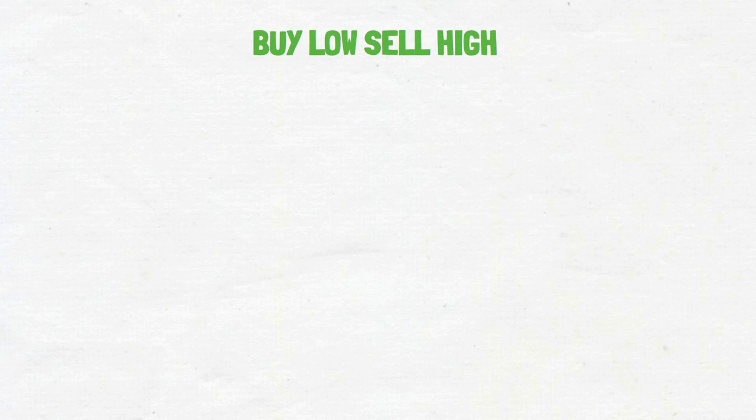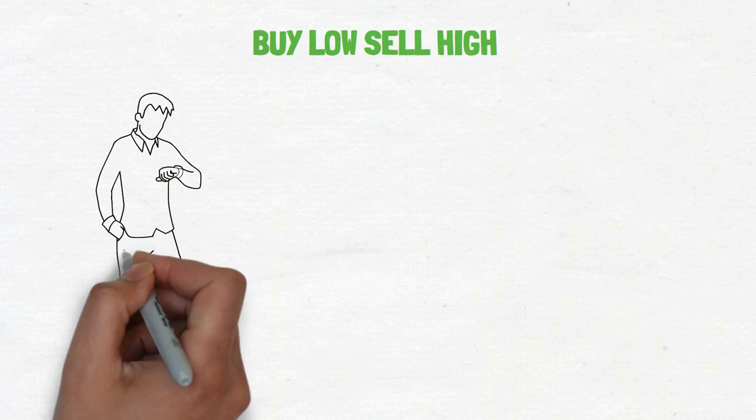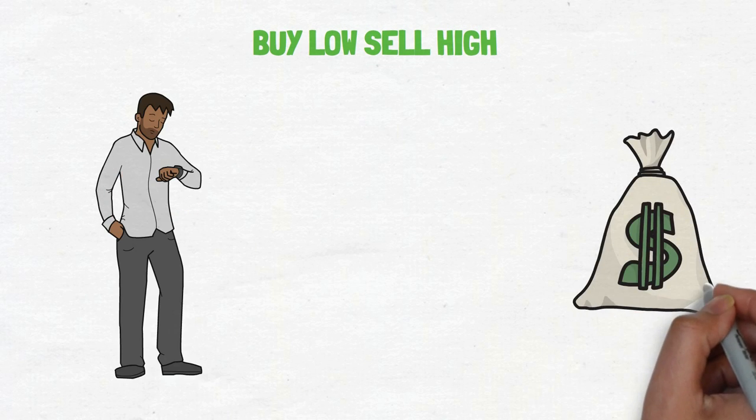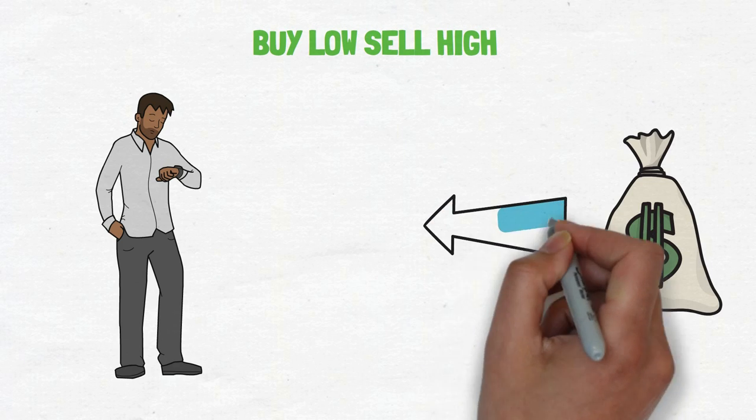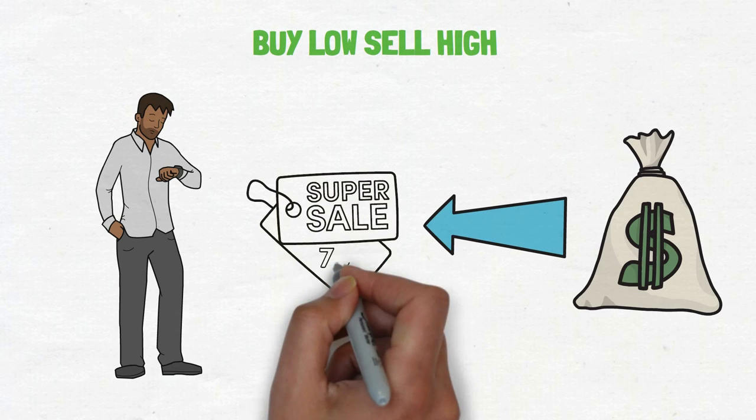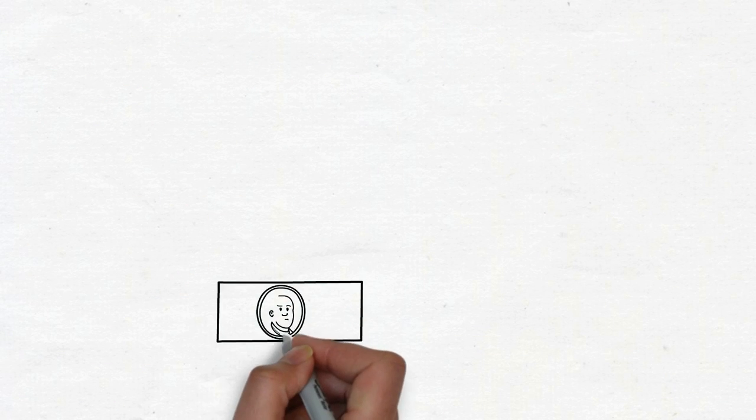This buy-the-dip strategy follows the buy low, sell high principle, which is a fundamental investment rule. While timing the market perfectly is extremely difficult, buying stocks with the intention of holding them long-term during periods when prices show a sharp decline can generally be a simple and effective strategy.